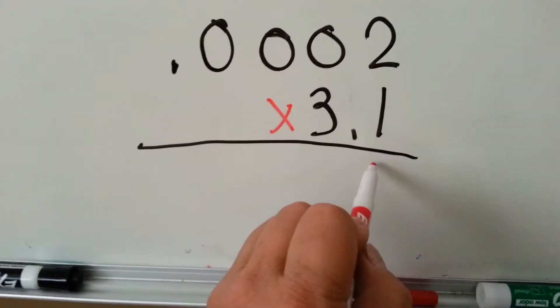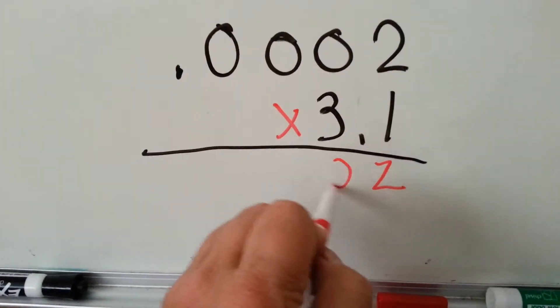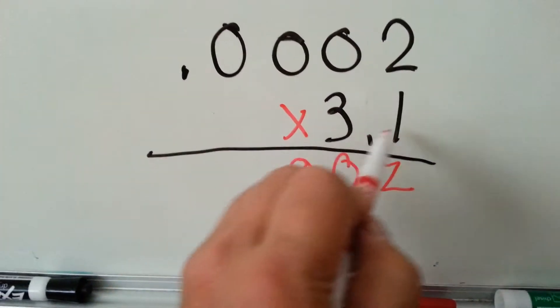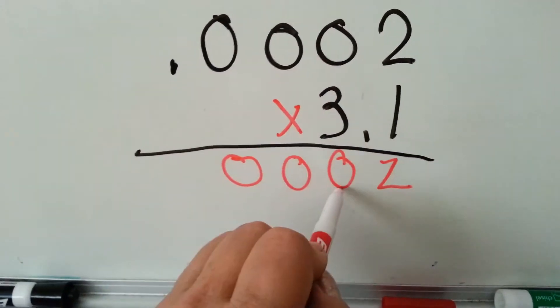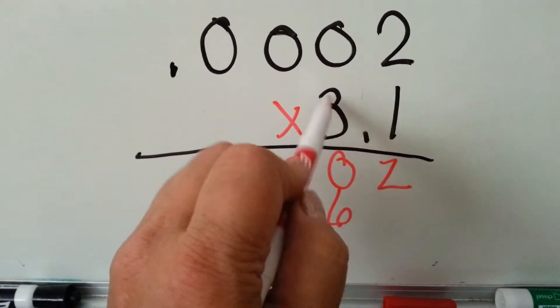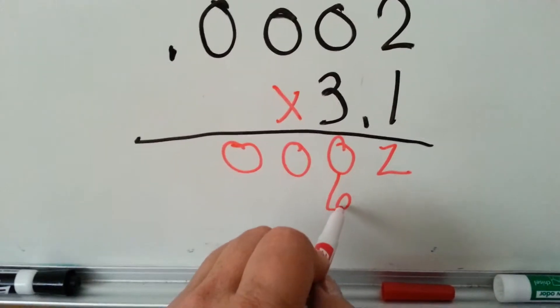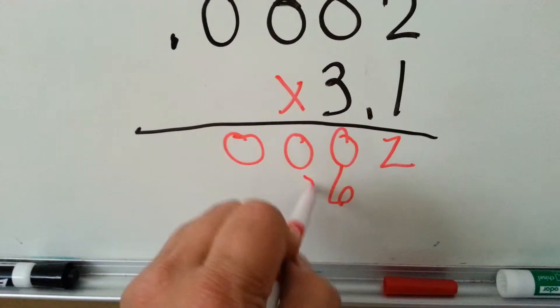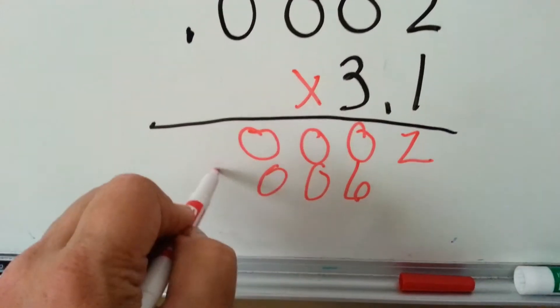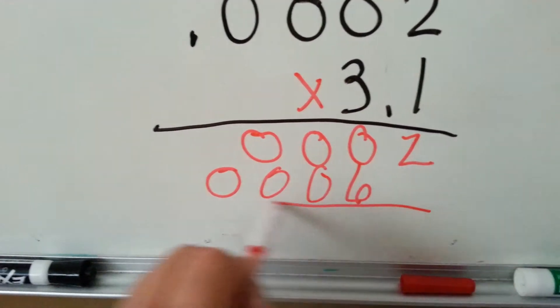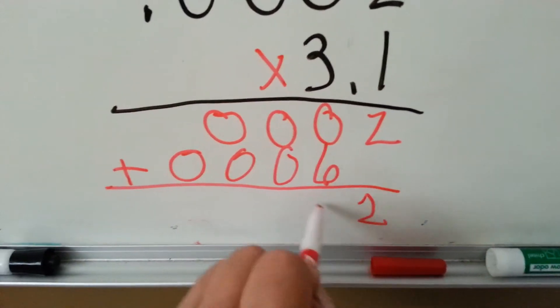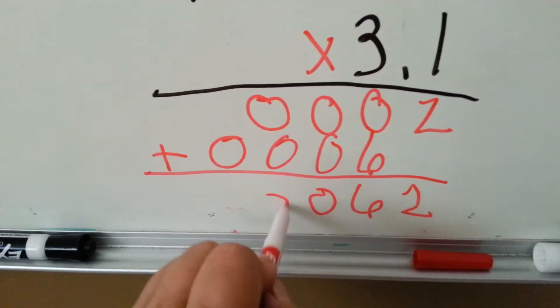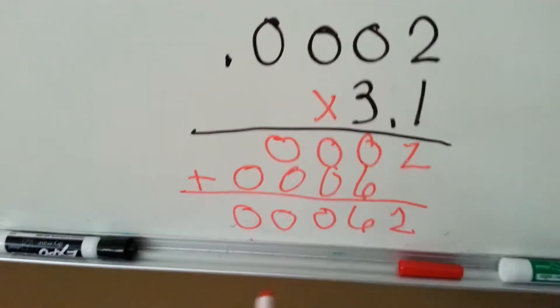1 times 2 is 2. 1 times 0 is 0. 1 times 0 is 0. 1 times 0 is 0. 3 times 2 is 6. And because we're multiplying this number in this column, the answer goes there. 3 times 0 is 0. 3 times 0 is 0. And 3 times 0 is 0. Now we add 2, 6, 0, 0, 0.